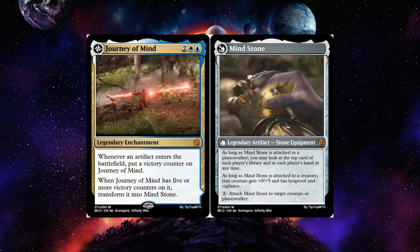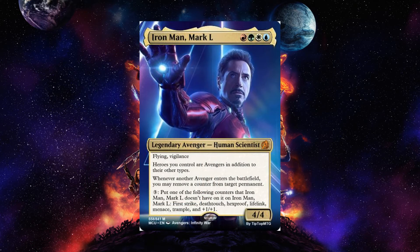We are finally moving away from Thanos — thirteen minutes in. Here's the new frame for Avengers: all Avengers including past Avengers will now be borderless and feature art from their individual posters. Iron Man Mark 50 is red, green, white, and blue — so he can be the commander of a four-color hero deck. He is a legendary Avenger human scientist 4-4 with flying and vigilance. Heroes you control are Avengers in addition to their other types — so he turns heroes into Avengers.